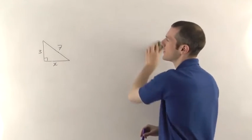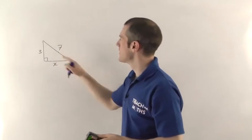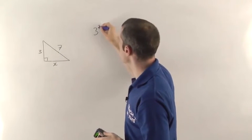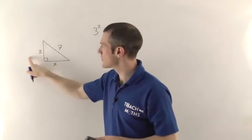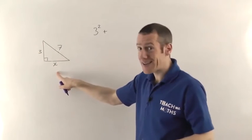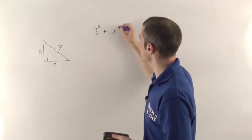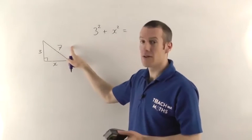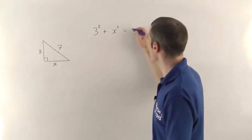So if we get rid of that one, now the 7 squared is going to be the thing that's by itself. So we've got 3 squared, the area of the square that would be here, plus x squared, we don't know what x is yet. When you add those together, you're going to get the area on this side, the square on this side, so that's going to be 7 squared.